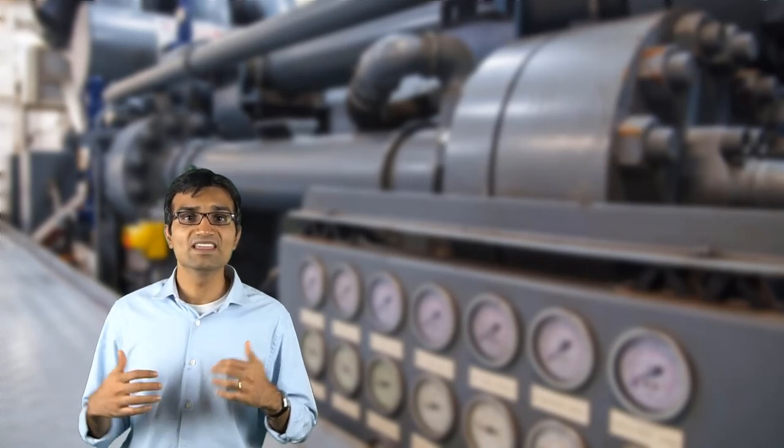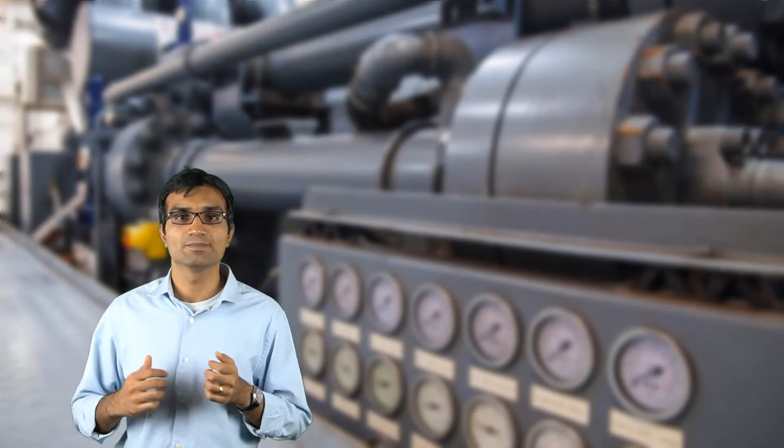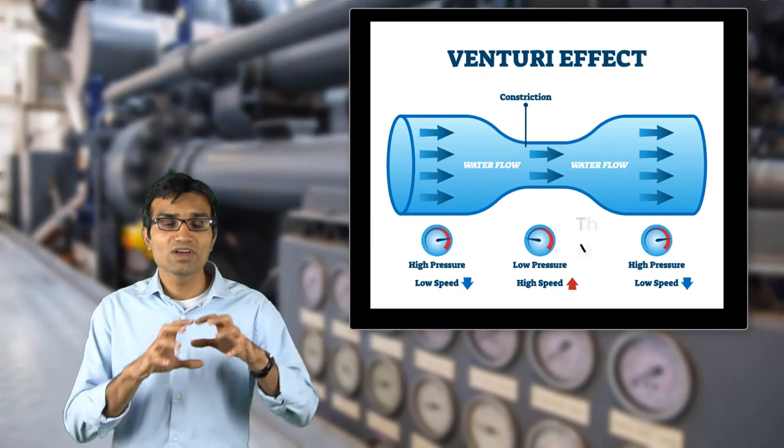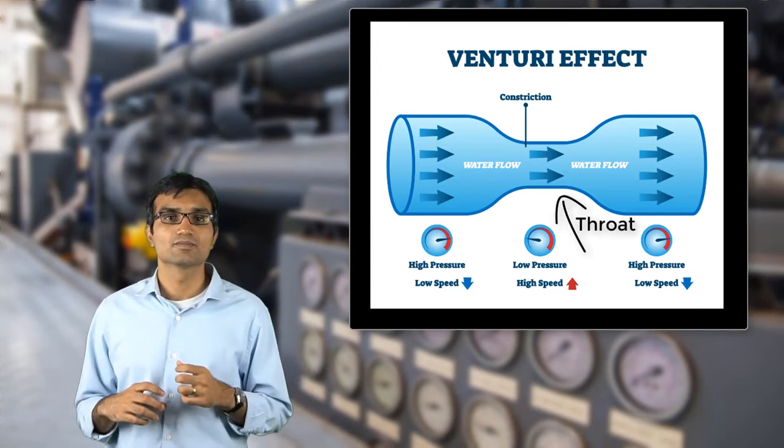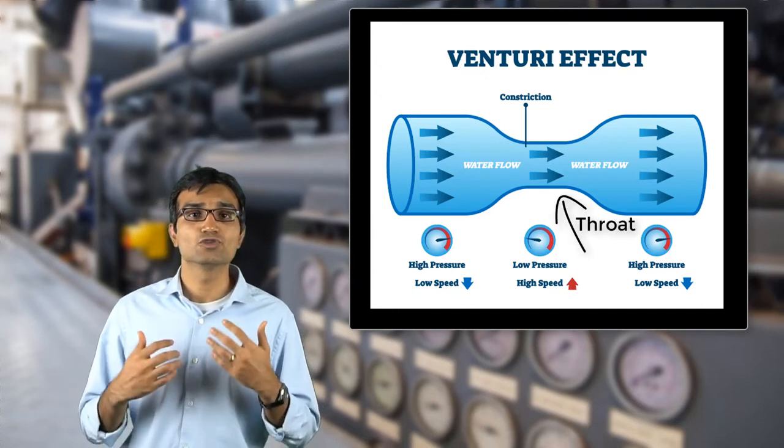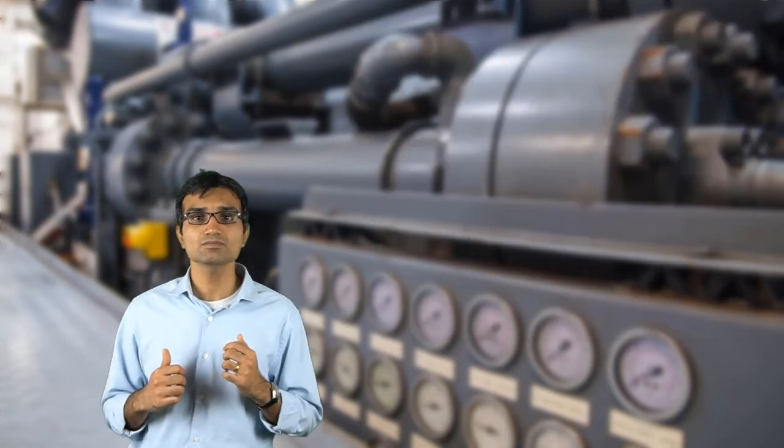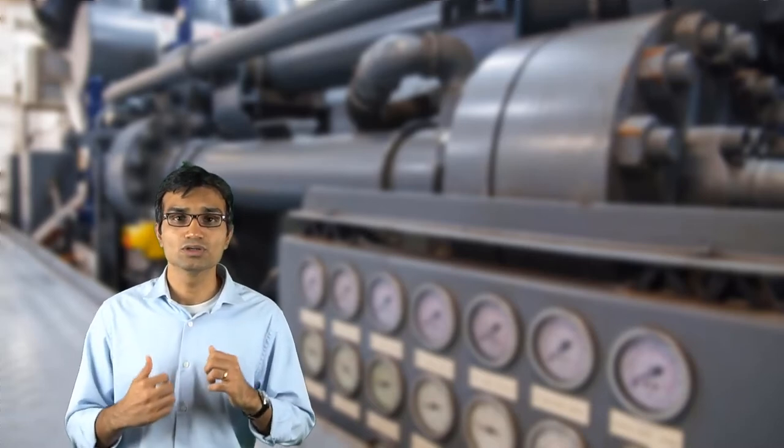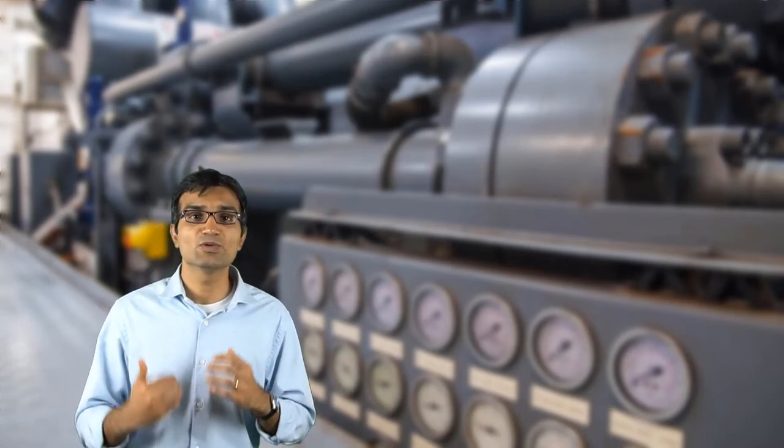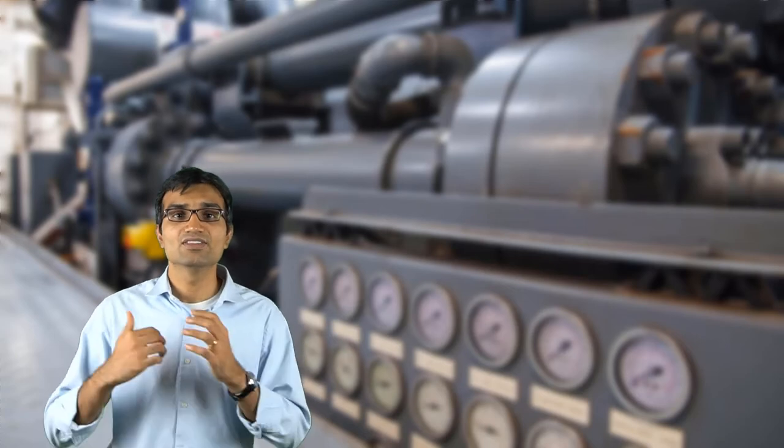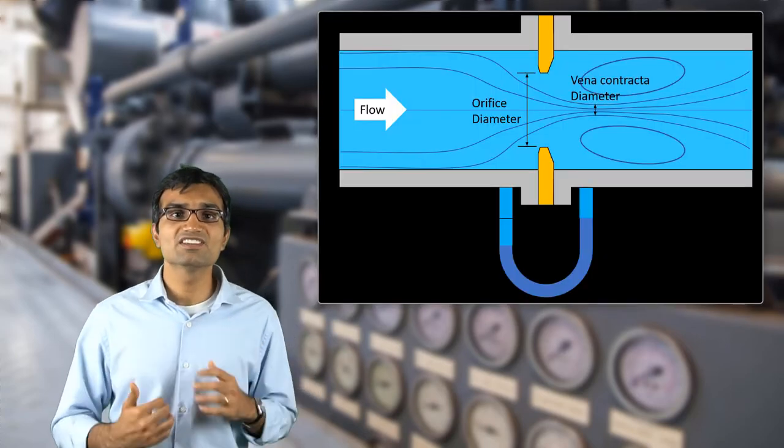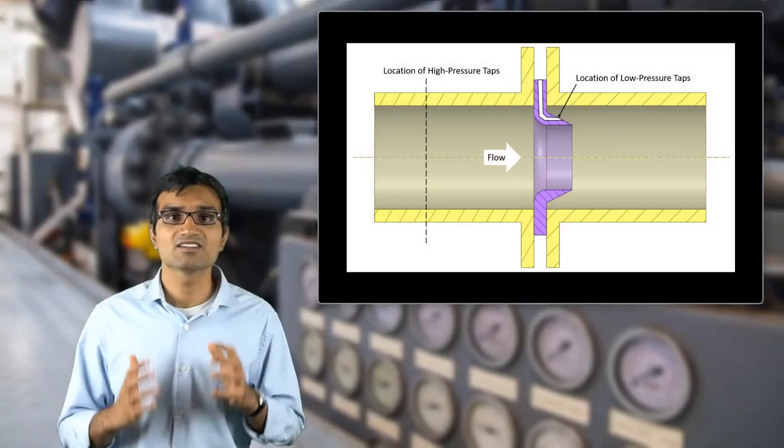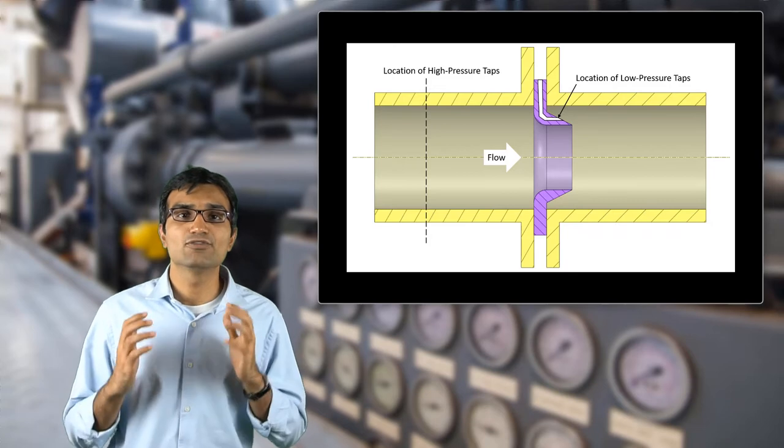A venturi tube is another common way of measuring fluid velocity. The venturi tube has a narrow section where the flow gets restricted. This section is commonly referred to as the throat of the venturi. Velocity is calculated based on pressure drop measurements across the throat and by taking the area ratios between the upstream section and the throat. A similar principle for measuring the mean velocity of the fluid is provided by devices such as orifice plates and flow nozzles.